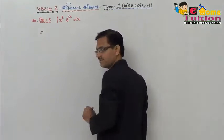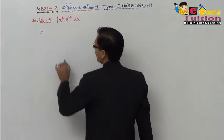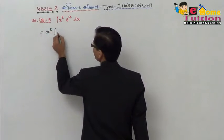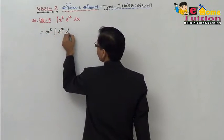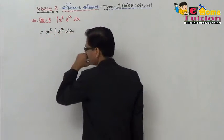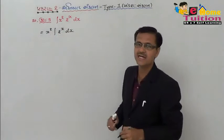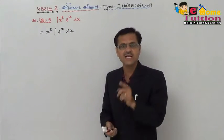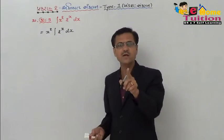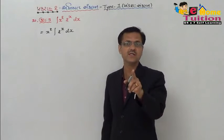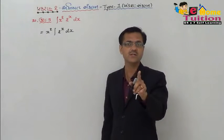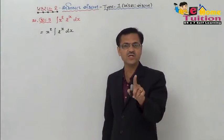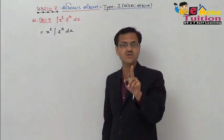is equal to x square. 2 minus 2x dx. x square is equal to x square, x square is equal to x square, 2x. x square is equal to x cube.